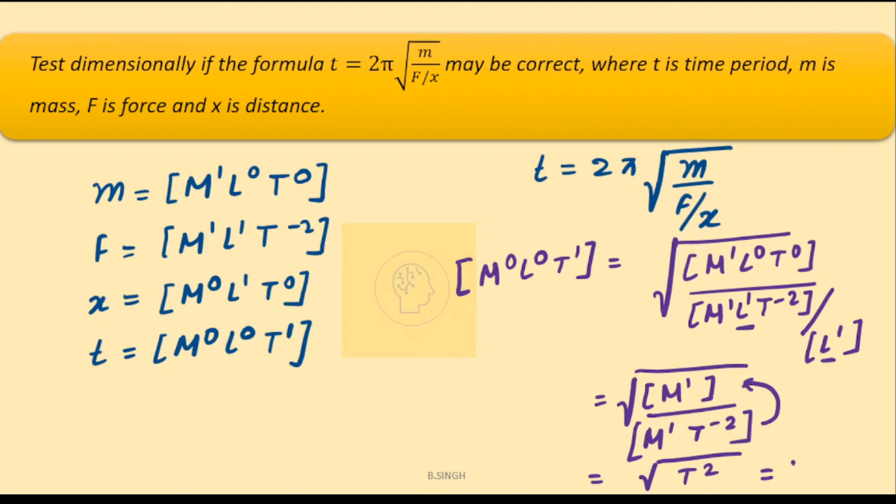So hence, we can write here, hence it is m0, l0, t to the power 1. So LHS equals RHS. Hence, this equation is dimensionally correct.